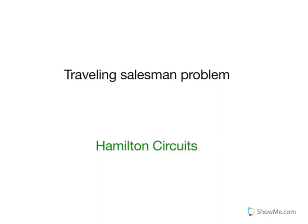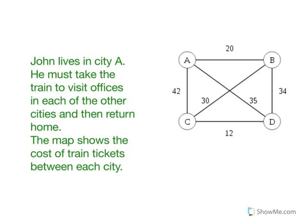This is about the traveling salesman problem, also called Hamilton circuits. Consider the following example: John lives in City A. He must take the train to visit offices in each of the other cities and then return to his home. The map shows the cost of train tickets between each city.